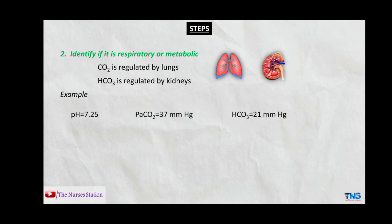Another example: pH 7.25, CO2 37, and HCO3 21. The pH is below normal so the patient is having acidosis. CO2 is within the normal range, so the patient is not having any respiratory condition. HCO3 is 21 which is below the normal range, indicating a metabolic condition. So the patient is having metabolic acidosis.